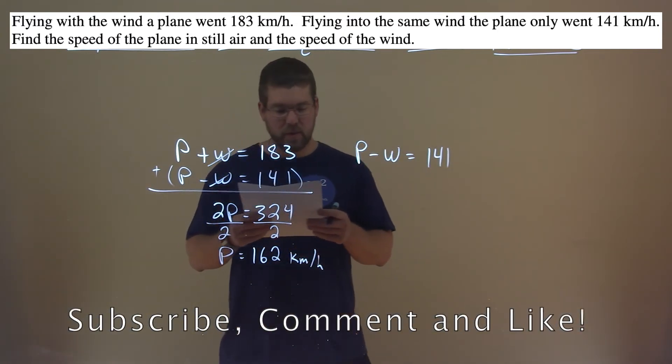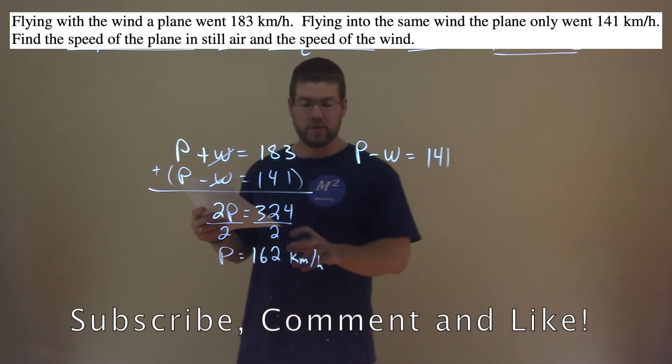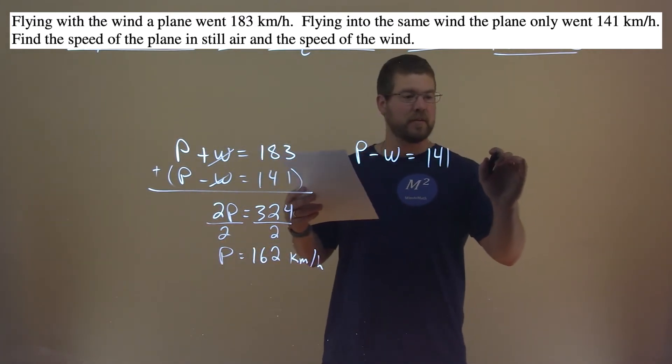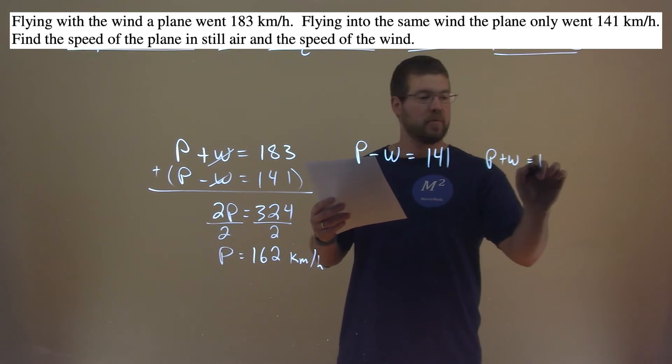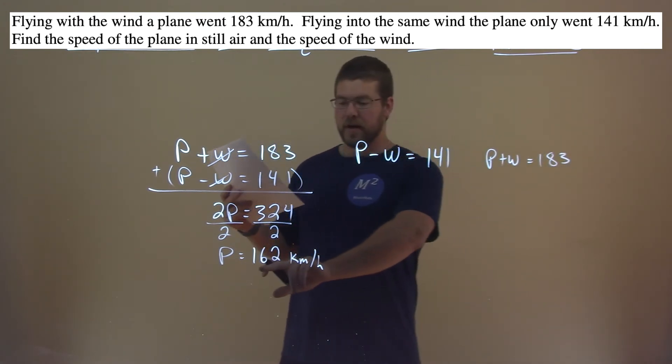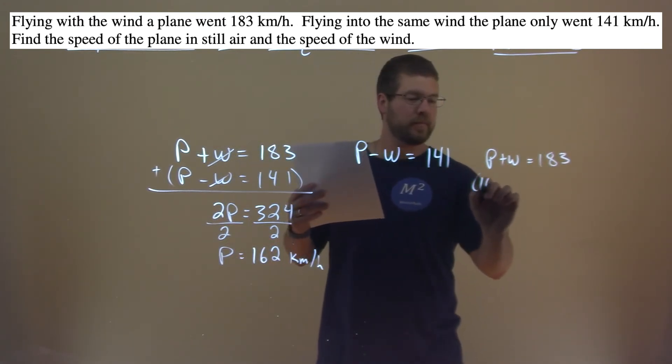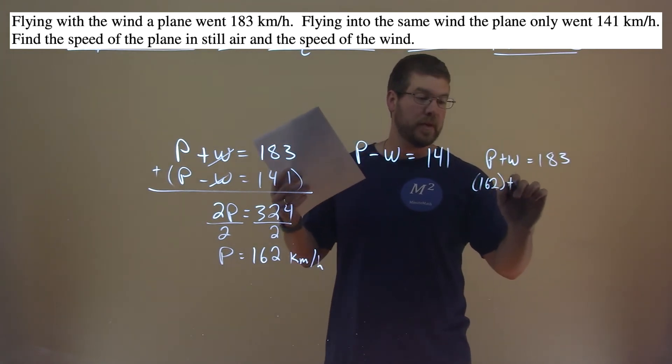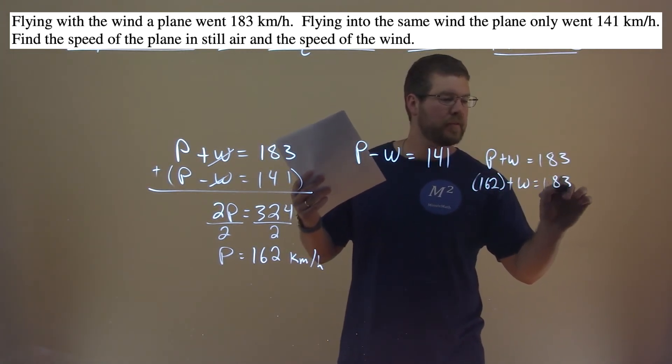So we're going to take that information, plug it into our equation, and solve for W. So all I'm going to do is take the first equation again. I think it's an easier one to work with. P plus W equals 183, and I'm going to plug in this P value of 162 in for P.